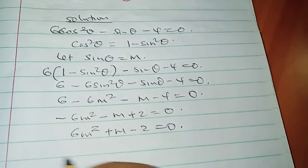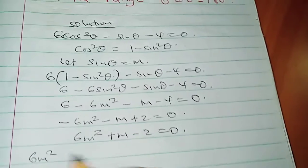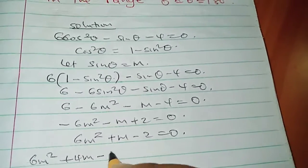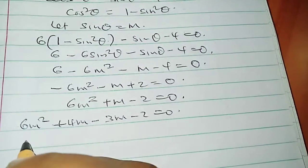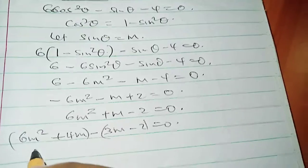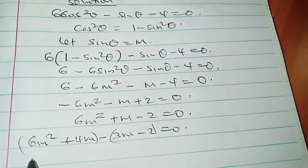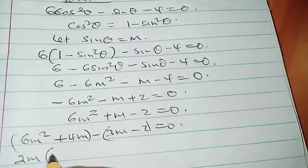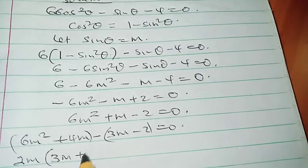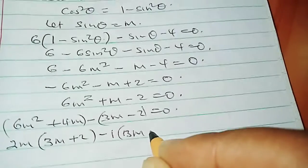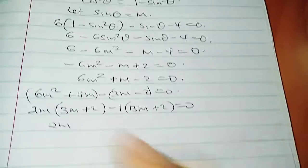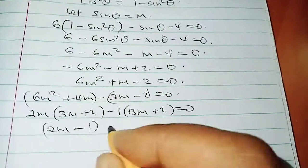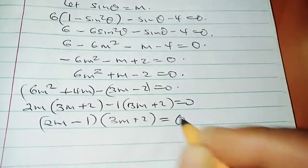So I'm going to use factor method here. We have 6m² + 4m - 3m - 2 = 0. And so we factor the quadratic equation. The first part gives us 2m(3m + 2) - 1(3m + 2) = 0. So we have (2m - 1)(3m + 2) = 0.